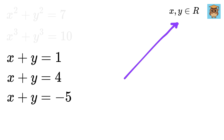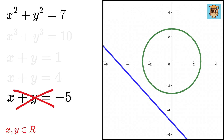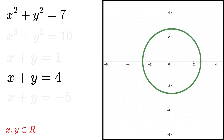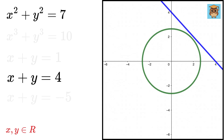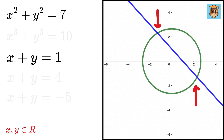But here comes the twist. We want x and y as real numbers. Notice x squared plus y squared equals 7 — its graph is a circle. First consider x plus y equals minus 5: its graph is a line that never intersects the circle, so no real solution exists. Similarly, x plus y equals 4 also does not intersect the circle. Finally, consider x plus y equals 1: its graph does intersect the circle, so x plus y equals 1 is the only valid solution.